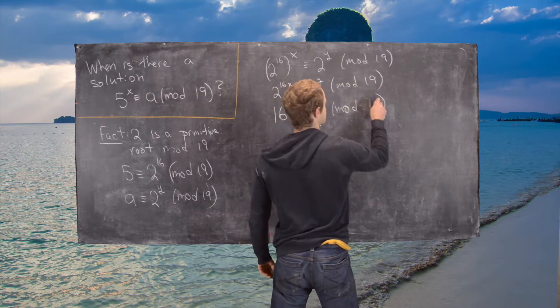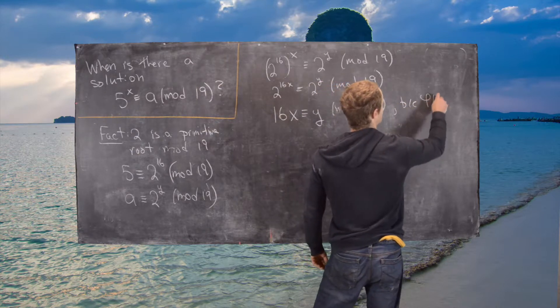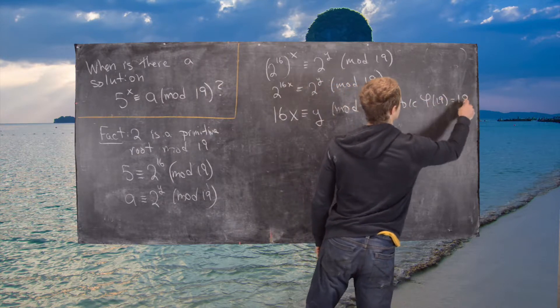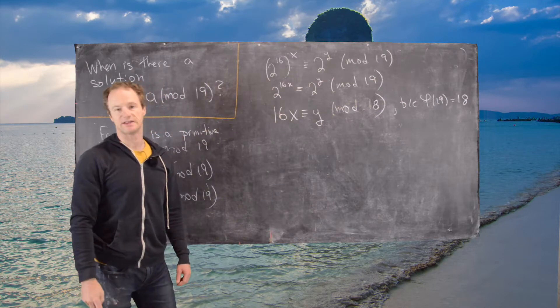And this is because phi of 19 is 19 minus 1 because 19 is prime, which is 18.